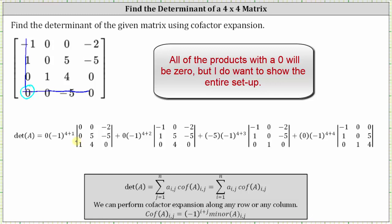We move along to the next element in row four. The next element is zero, in row four, column two. Therefore we multiply by negative one raised to the power of four plus two, and then we multiply by the determinant of the matrix formed by eliminating row four and column two. That gives us the three by three determinant where the first row is negative one, zero, negative two; the second row is one, five, negative five; and the third row is zero, four, zero.